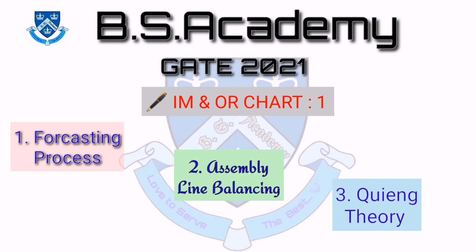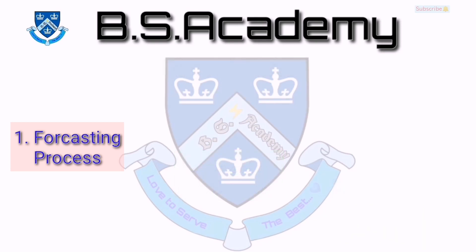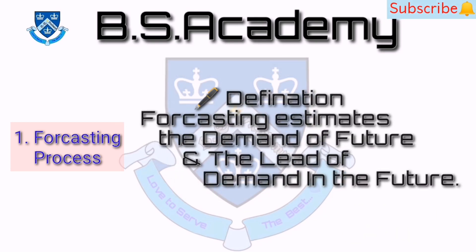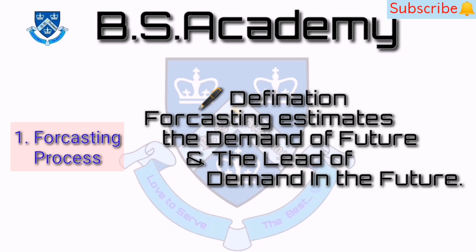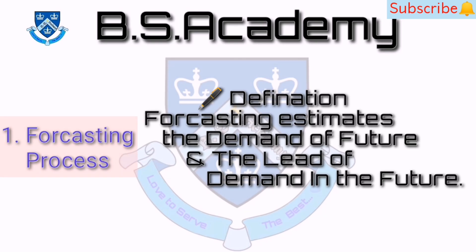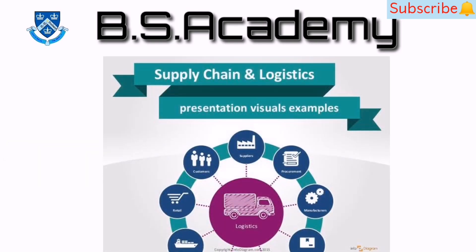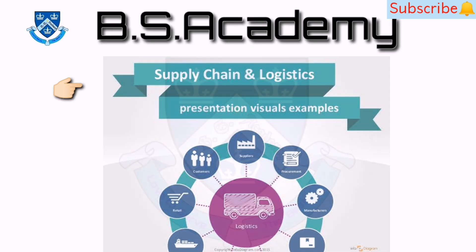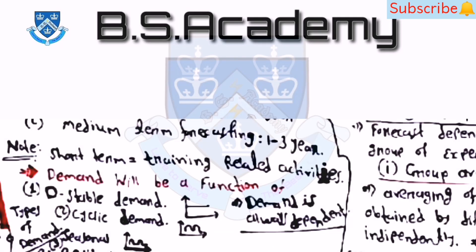Let's begin with forecasting. Forecasting estimates the demand of the future. In supply chain management, the chain goes: supplier → manufacturer → warehouse → distributors → retailers → customers.